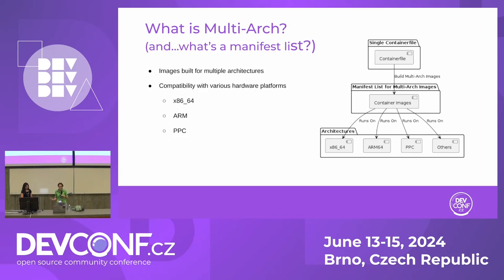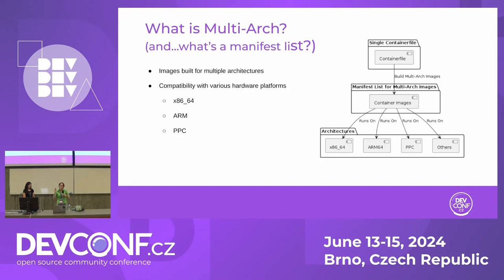So what's a manifest list? It's a way of bundling different architecture images into something that feels like a single image. You can think of a manifest list like an index that references the actual images built for the different architectures. You probably use manifest lists all the time and may not realize it — anything you pull down from a registry is probably a manifest list, and whatever container engine you're using just knows to pull down the right architecture version.